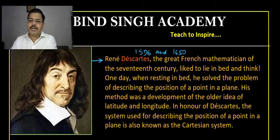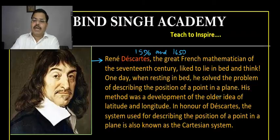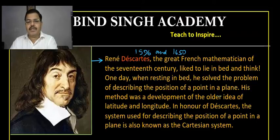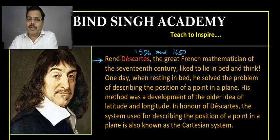Descartes liked to lie in bed and think. One day, while resting, he solved the problem of describing the position of a point in a plane. His method was developed from the idea of latitude and longitude. In honor of Descartes, the system used for describing the position of a point in a plane is called the Cartesian system. The position represented by two perpendicular distances is called Cartesian coordinates. These two perpendicular reference lines are called axes.